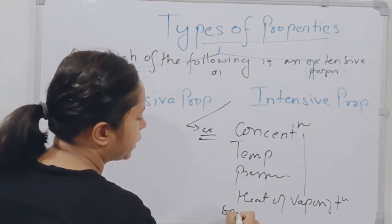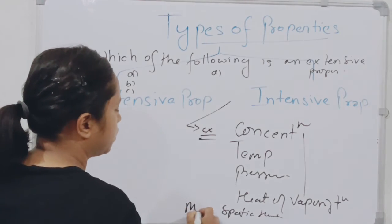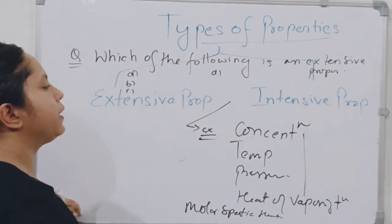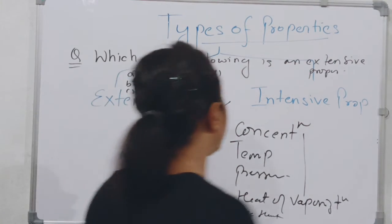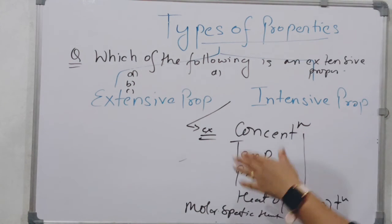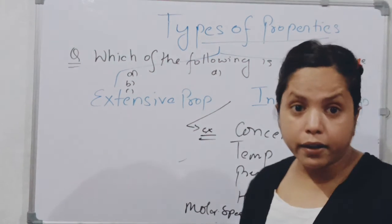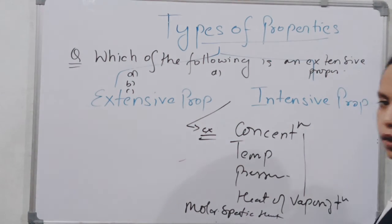So in exam you can get these factors or parameters and they say which of the following is not an extensive property. In that way they can ask any type of question.